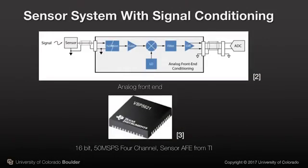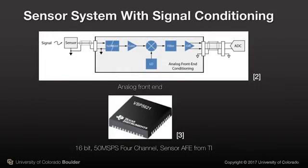The output of the ADC is typically 8, 12, 16, or 24 bits. Data from an ADC is usually converted to a serial format such as I2C, SPI, or RS-232.